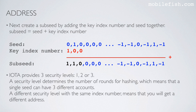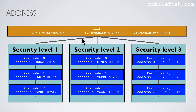IOTA provides 3 security levels: 1, 2, or 3. The security level determines the number of rounds for hashing, which means that a single seed can have 3 different accounts. A different security level with the same index number means that you will get a different address. If you use security level 1 you generate one set of addresses; security level 2 generates a different set; and security level 3 generates yet another set. The addresses are not the same for the same key index number.